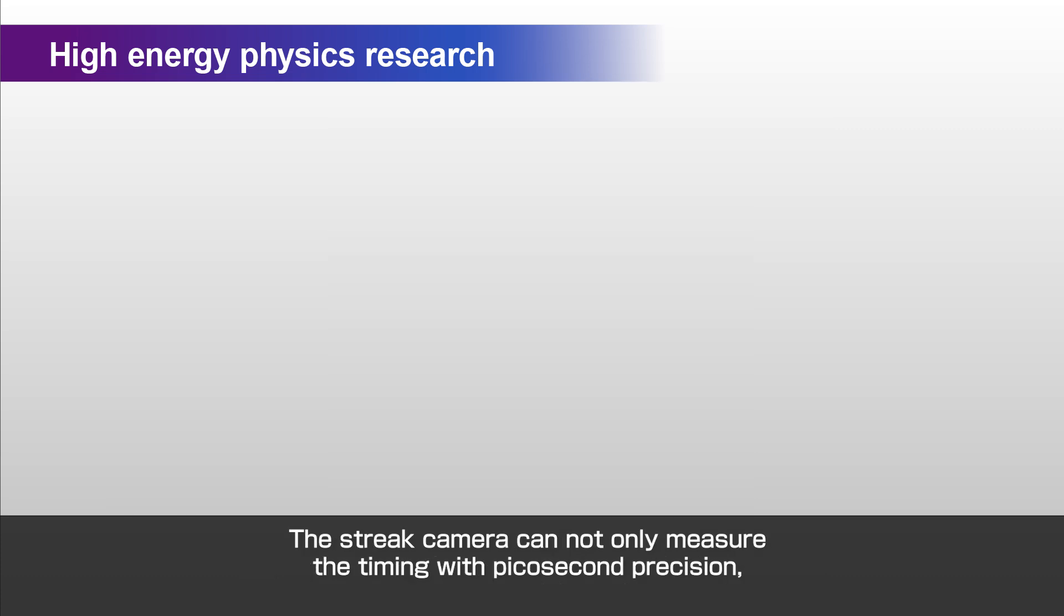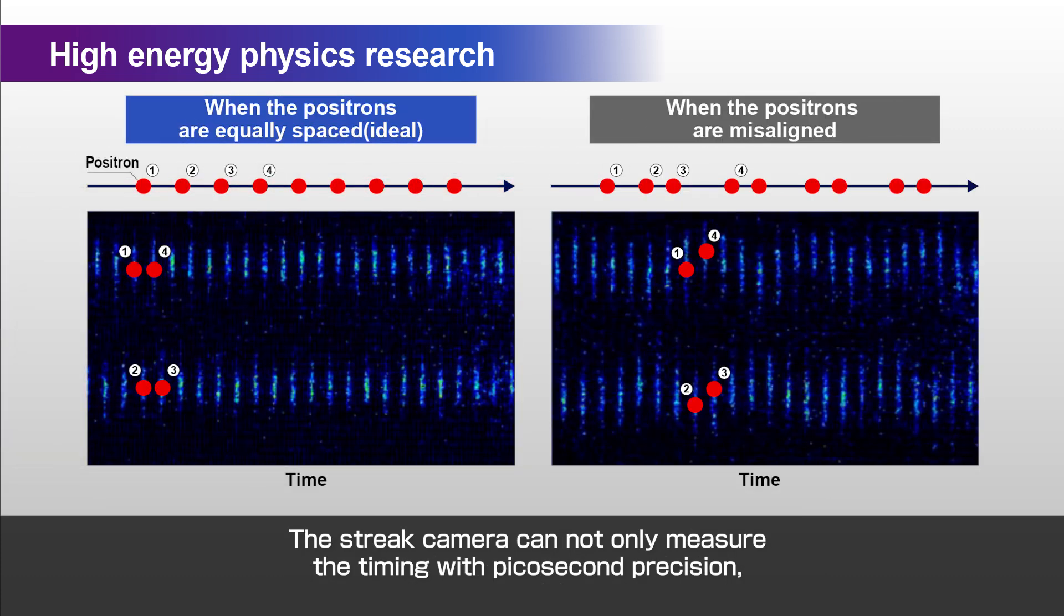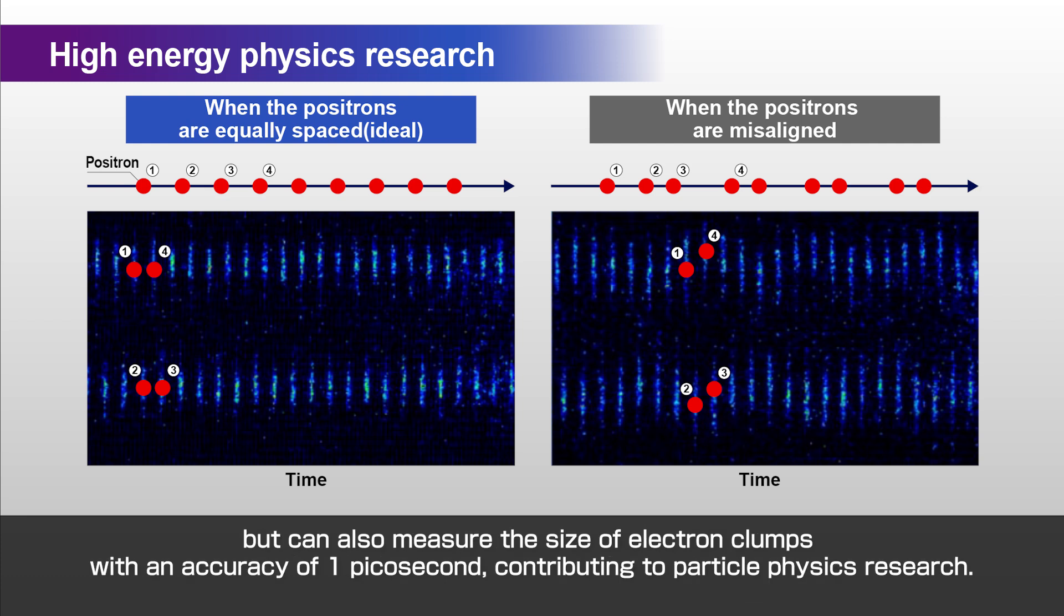The streak camera can not only measure the timing with picosecond precision, but can also measure the size of electron clumps with an accuracy of 1 picosecond, contributing to particle physics research.